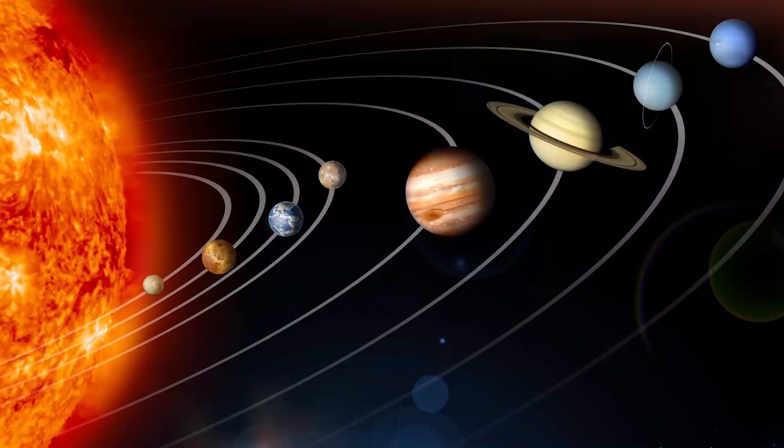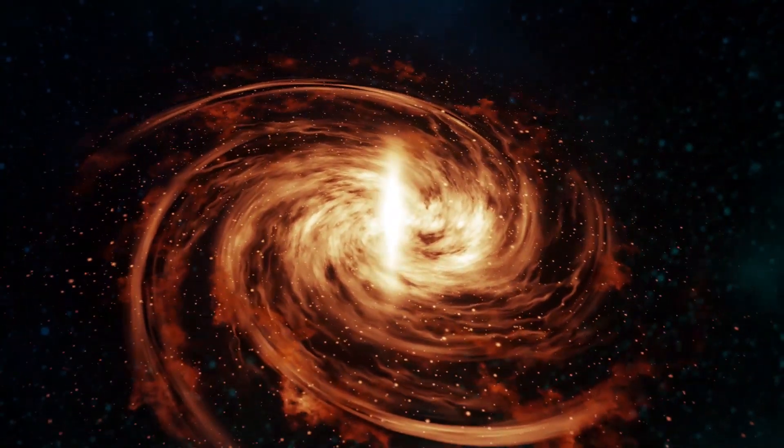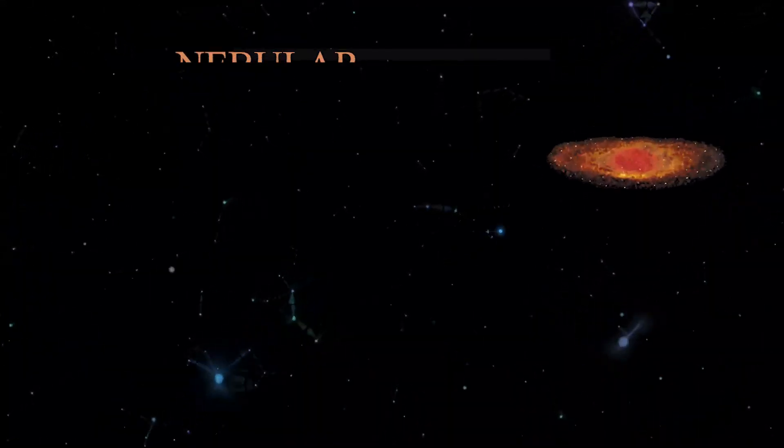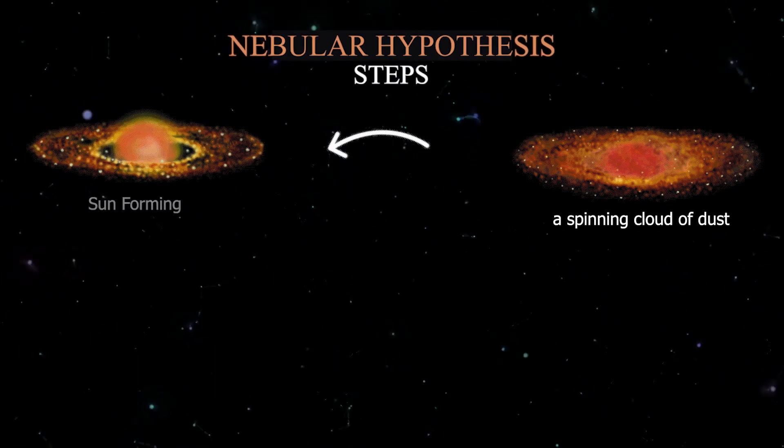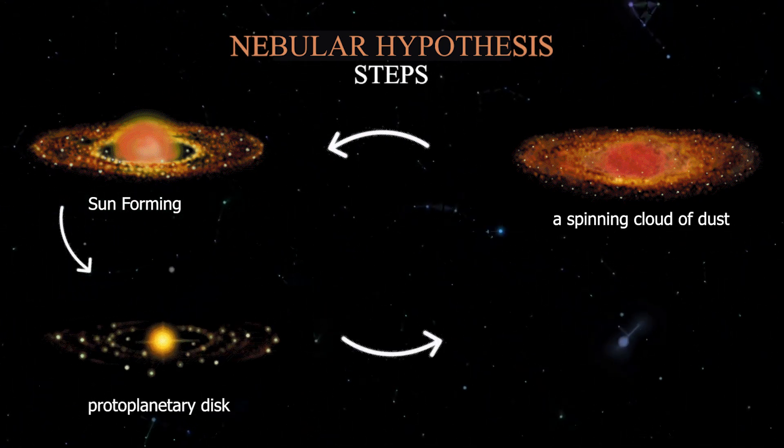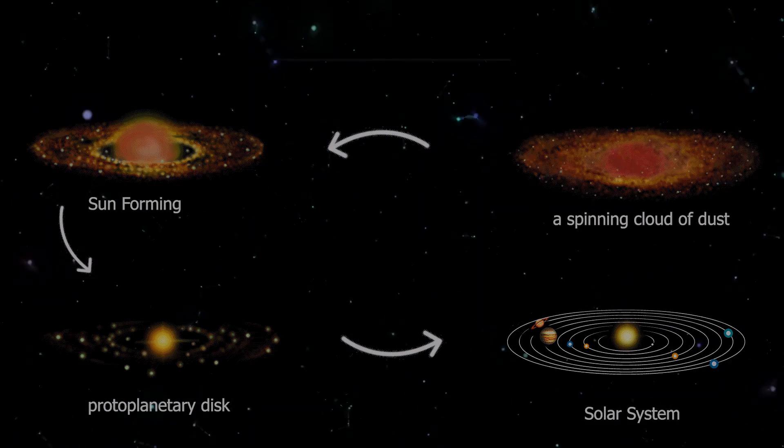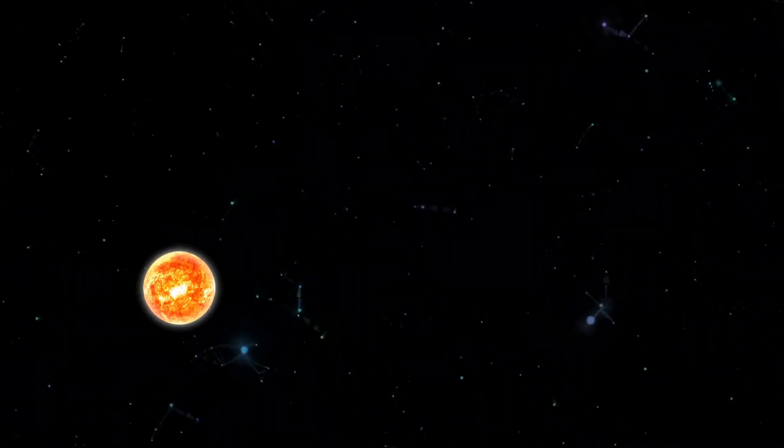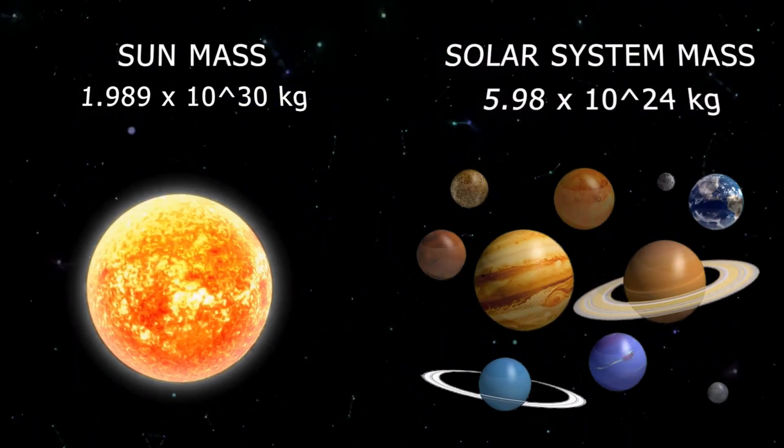Our solar system was formed during the same time as our sun. At least, that's what the nebular hypothesis tells us. This scientific theory states that a spinning cloud of dust, made of mostly light elements called nebula, flattened into a protoplanetary disk and then became a solar system consisting of a star with several planets orbiting around it. The spinning nebula recollected most of the materials in the center, and that is why the sun accounts for 99% of the entire mass of our solar system.